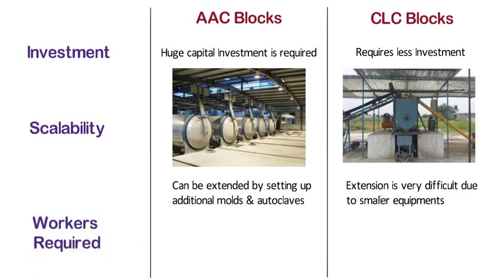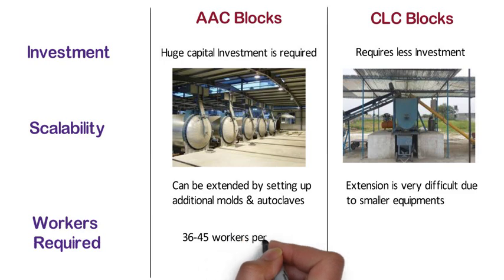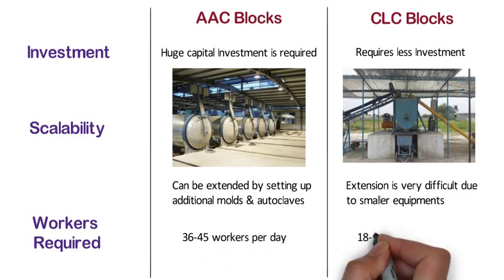Workers required. An average size AAC plant requires 36 to 45 workers per day. Whereas, an average size CLC plant requires 18 to 30 workers per day.